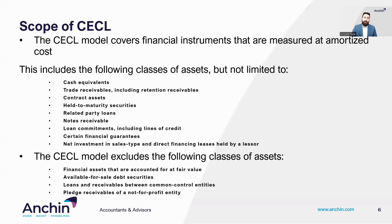CECL does not apply to financial assets accounted for at fair value, as the standard is aimed at assets recorded at amortized cost only. This therefore also excludes available-for-sale securities. Additionally, there are two scope exceptions built into ASC 326, which include loans and receivables between entities under common control and not-for-profit entities' pledge receivables.